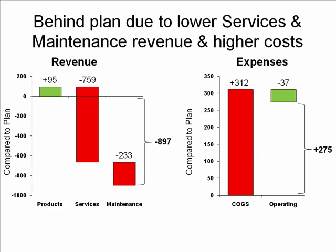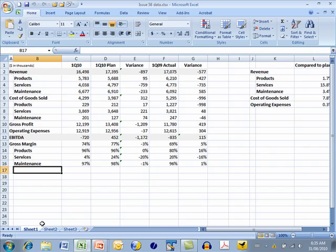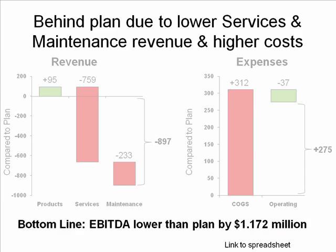So putting those two together, here's the bottom line picture: our bottom line is lower than we expected by over one point one seven million dollars. If someone has a question and wants to get into some numbers, I can go right into the spreadsheet and talk about specific numbers. Once we're done, simply exit the spreadsheet and we go back to our presentation.